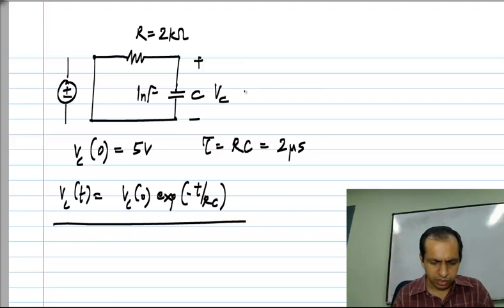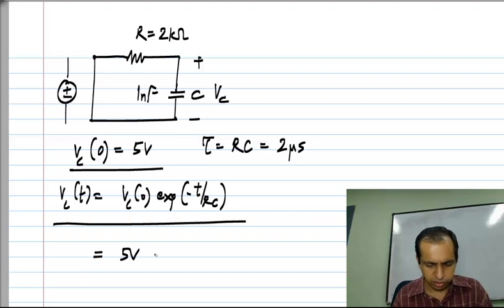And the initial condition is already given to be five volts. So, the solution to this is five volts exponential minus t by tau which is two microseconds.